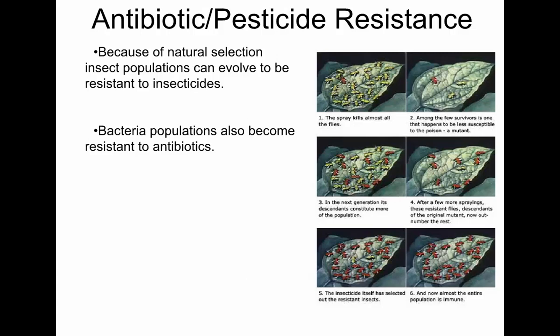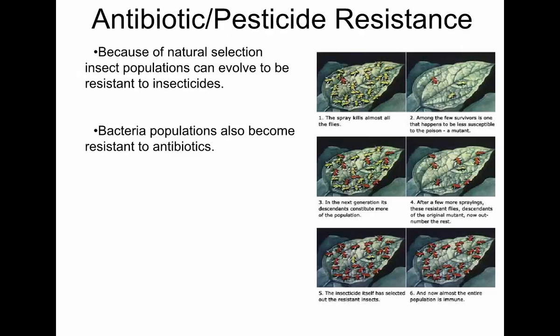A couple days later your throat starts to hurt again, but this time the infection is worse. If you go back to the doctor and they give you more amoxicillin, it's probably not going to work because you selected for the strongest and most resistant bacteria. That's why you take it all the way through — pretty much none of them are going to survive a full 10-day course of antibiotics. You take it because of natural selection. The same thing happens in insects and insecticides as well.